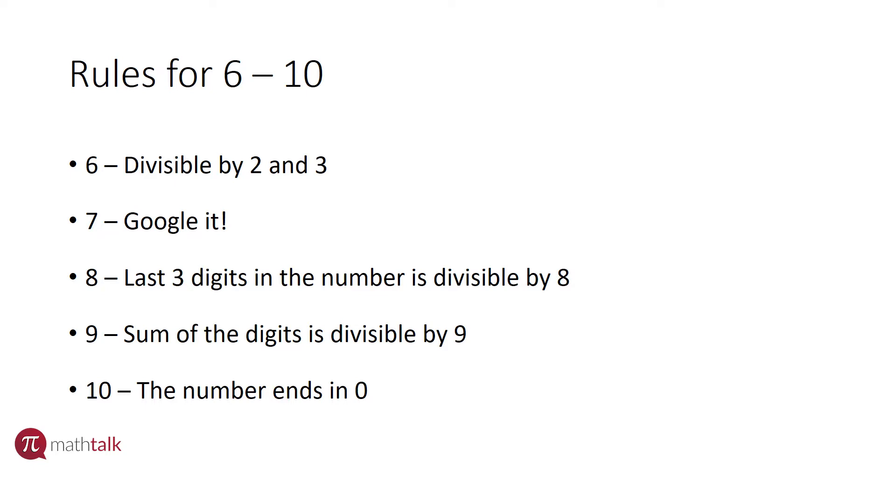The rule for nine is very similar to the rule for three. It says you can take the sum of the digits, and if that number is divisible by nine, then the number itself is divisible by nine. The rule for three is pretty much the same thing, except you're looking at being divisible by three instead of nine.